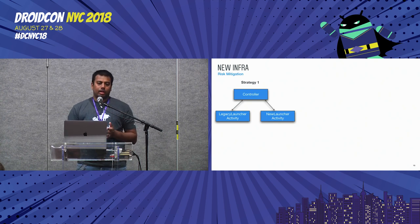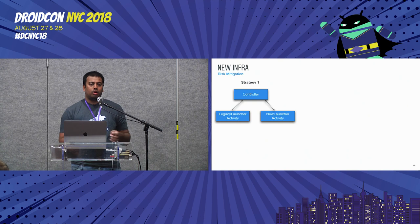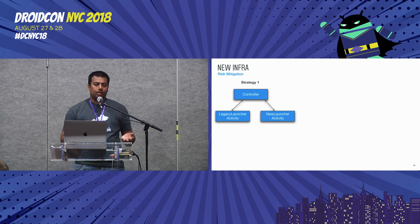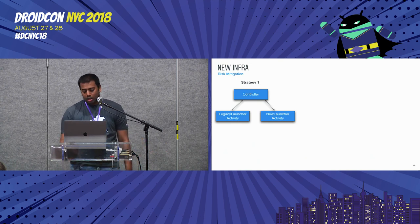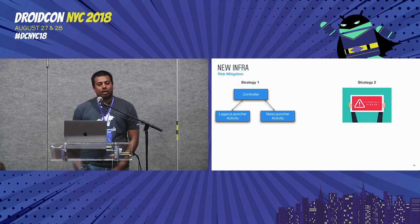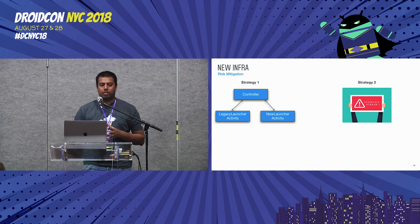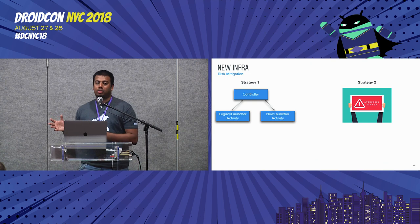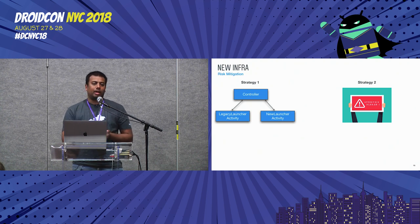This way, even if an engineer came in and wanted to add new code, they'd add it into the controller, and we ensured that code worked in both the legacy and new launcher. We trained engineers to contribute everything into our controllers, so we never had a situation where functionality was missing when testing. The other strategy was heavy communication — with our product teams in New York and California — at least once every three to four weeks, sharing progress, milestones hit, and what was coming next.